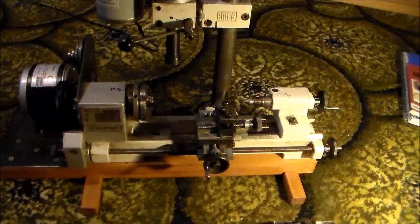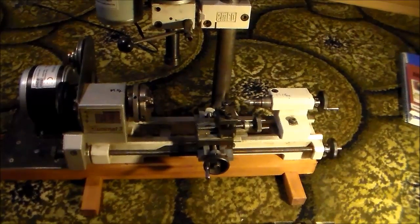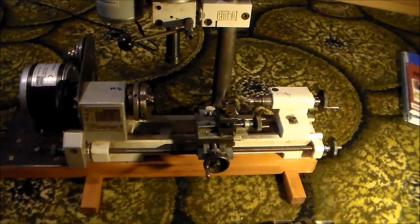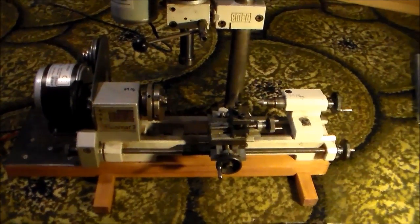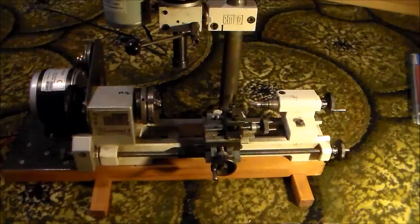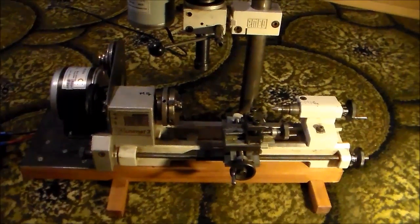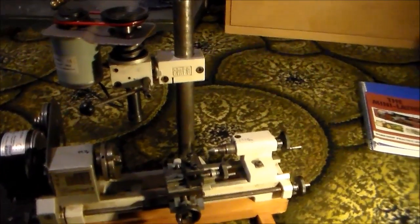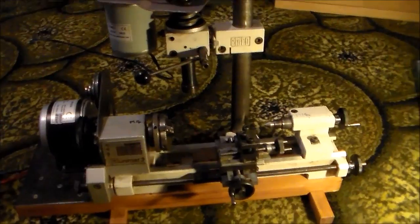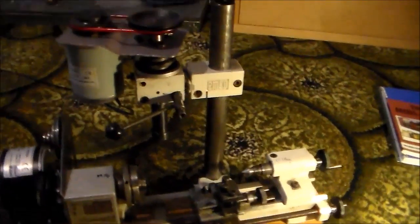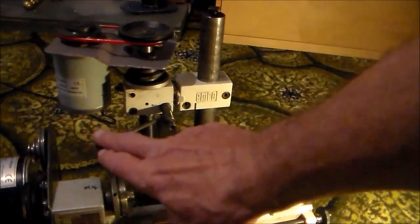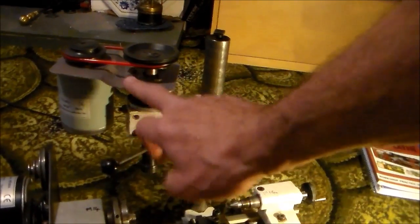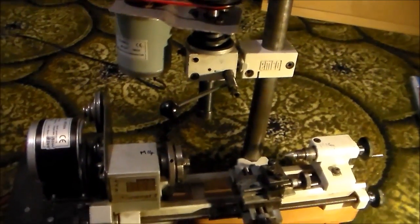It's similar in size to the Unimat SL lathe, which has got the round bars for the bed and where you actually remove the headstock and attach it to the column in order to get the drilling operation. At least with the Unimat 3 and 4, you do get a separate milling head on it, but you didn't originally get a separate motor.